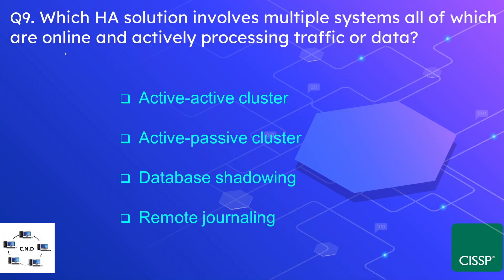Question number 9: Which high availability (HA) solution involves multiple systems, all of which are online and actively processing traffic or data? The options are active-active cluster, active-passive cluster, database scheduling, and remote journaling. The correct option is the active-active cluster. As the name indicates, in this solution all systems are active at the same time, processing and online simultaneously.